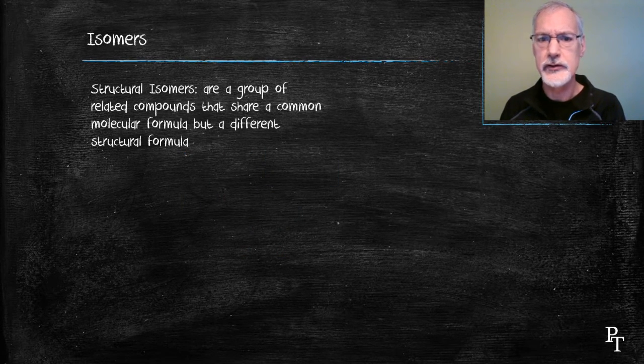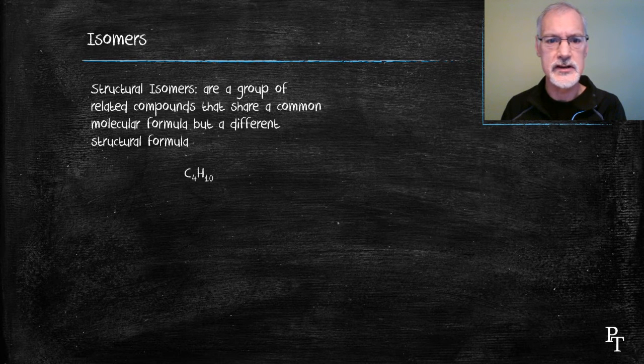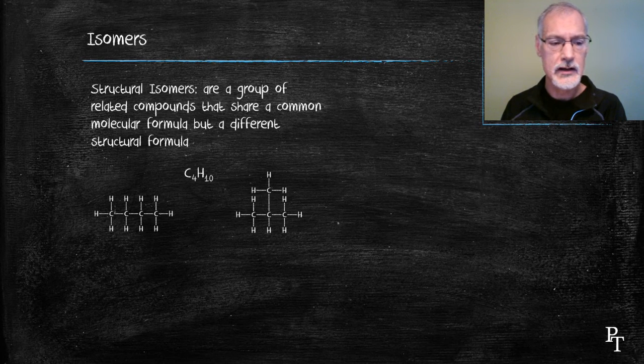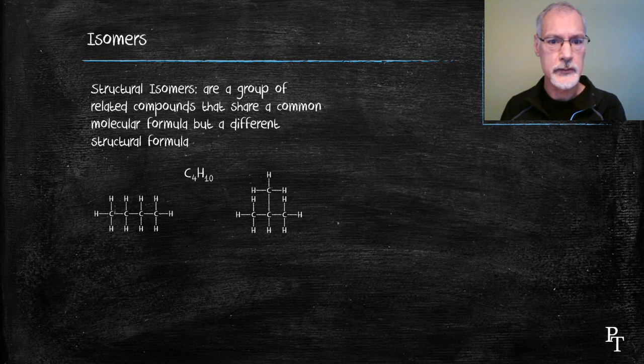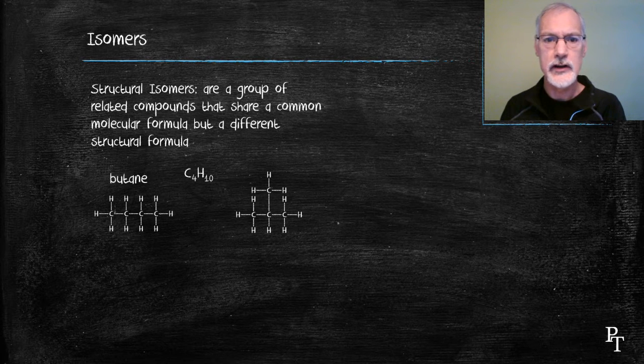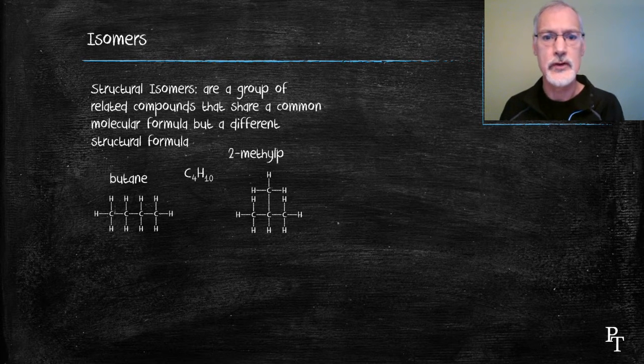Structural isomers are chemicals that share the same chemical formula but different structures. So consider for instance, C4H10 or butane. We can draw it in two forms. One, straight line, in which case we call it butane. But we could also consider a 3-carbon chain with a branch in the middle, 2-methyl propane.